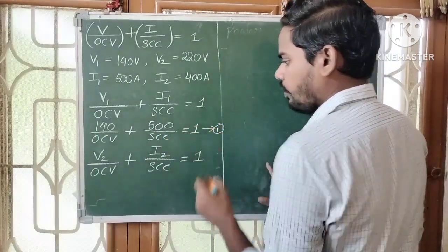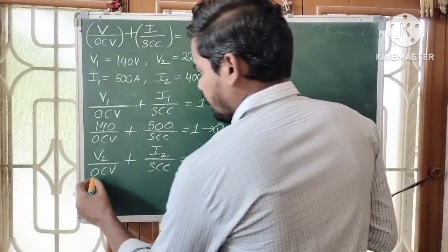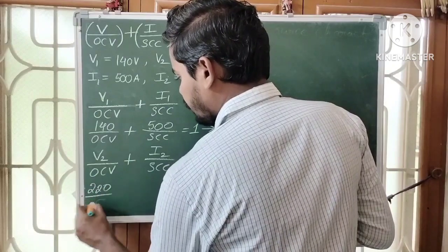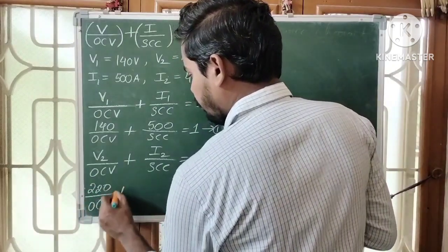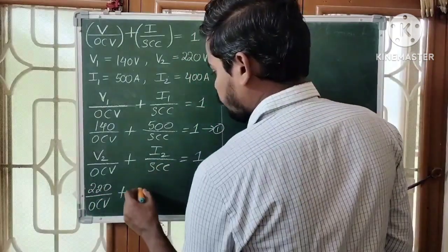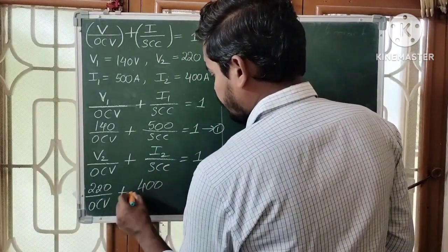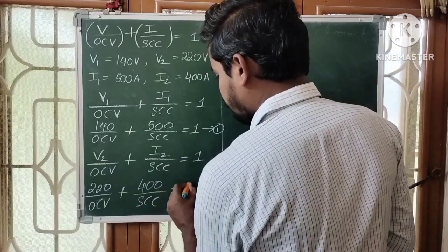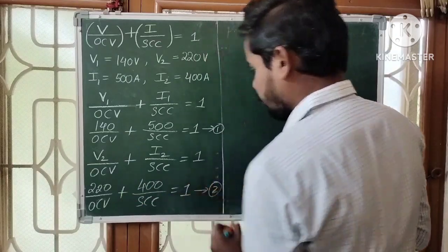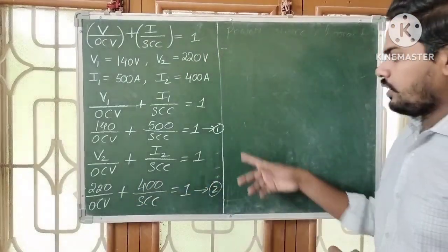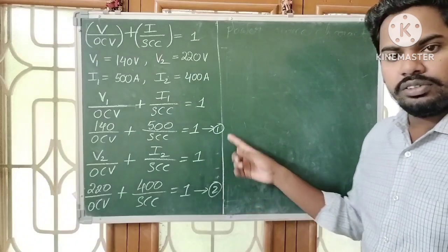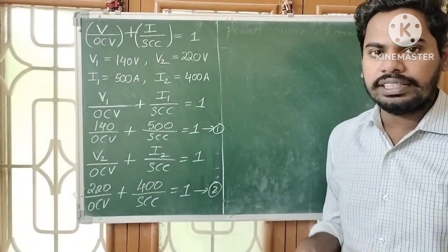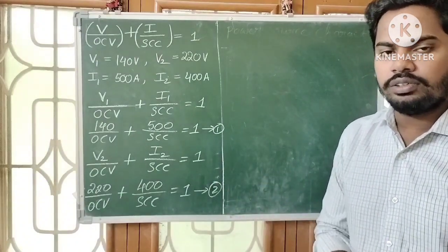Substituting V2 and I2: 220/OCV + 400/SCC = 1 — call this equation 2. By solving equations 1 and 2, we can find OCV and SCC.